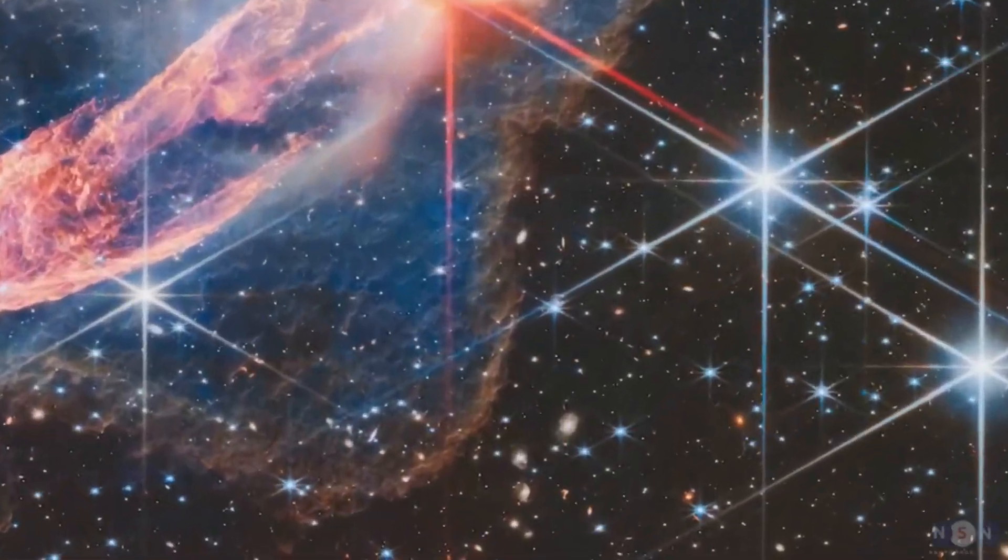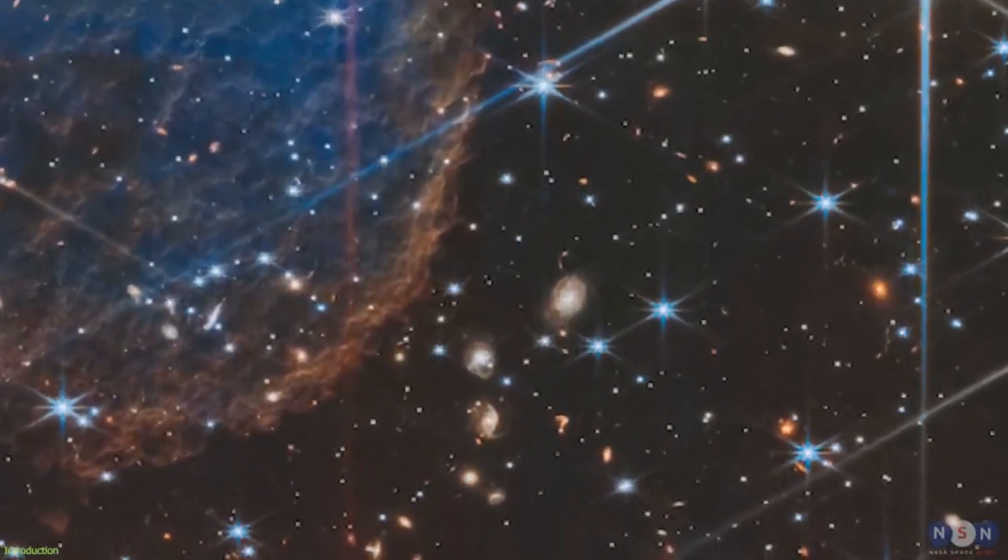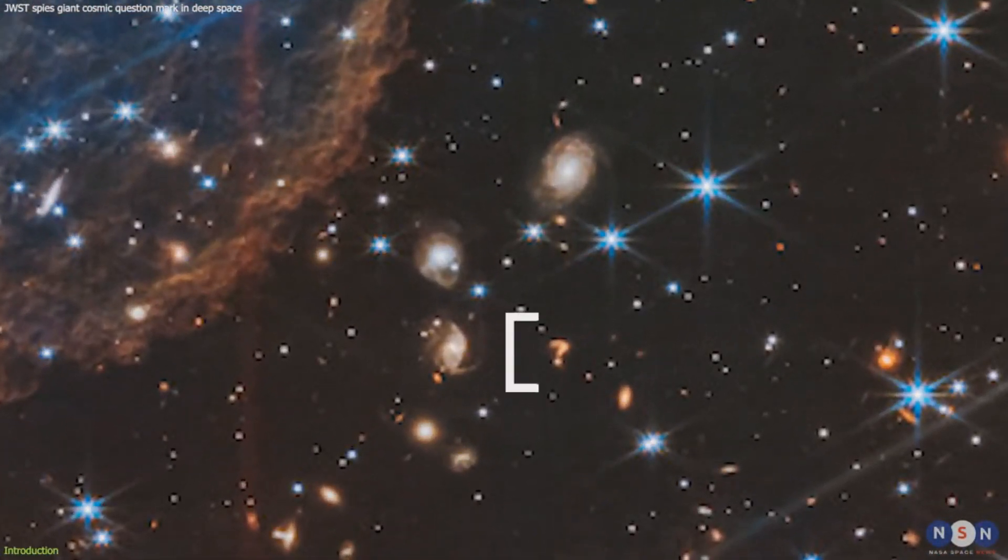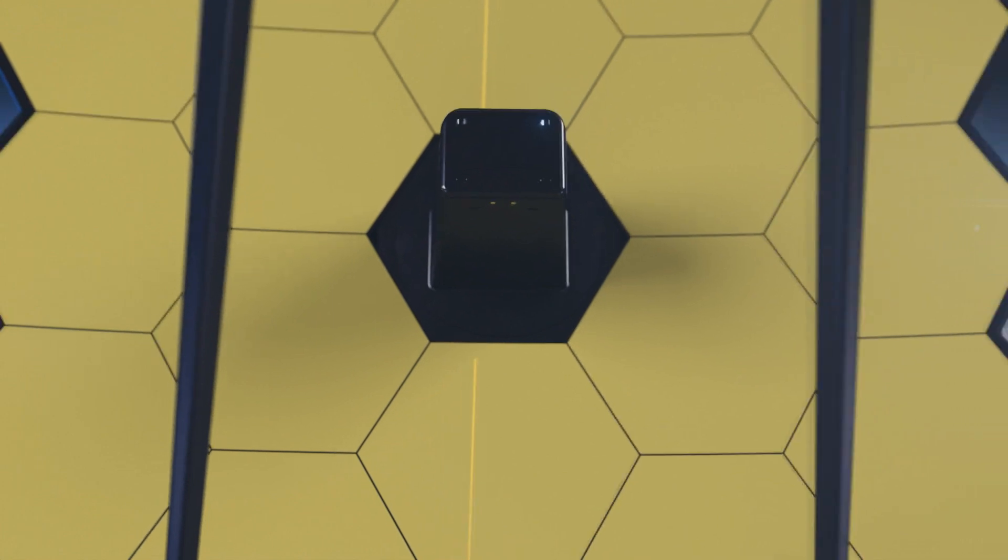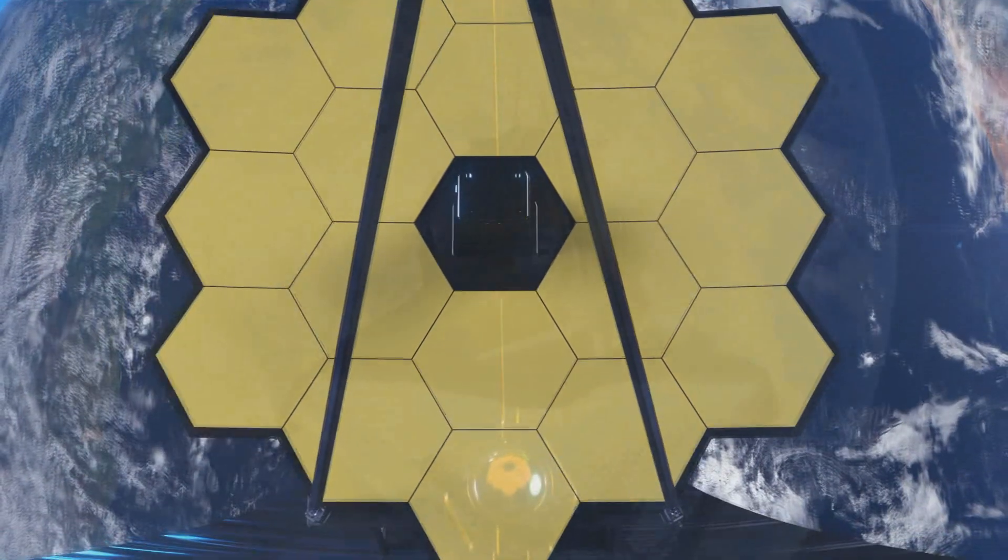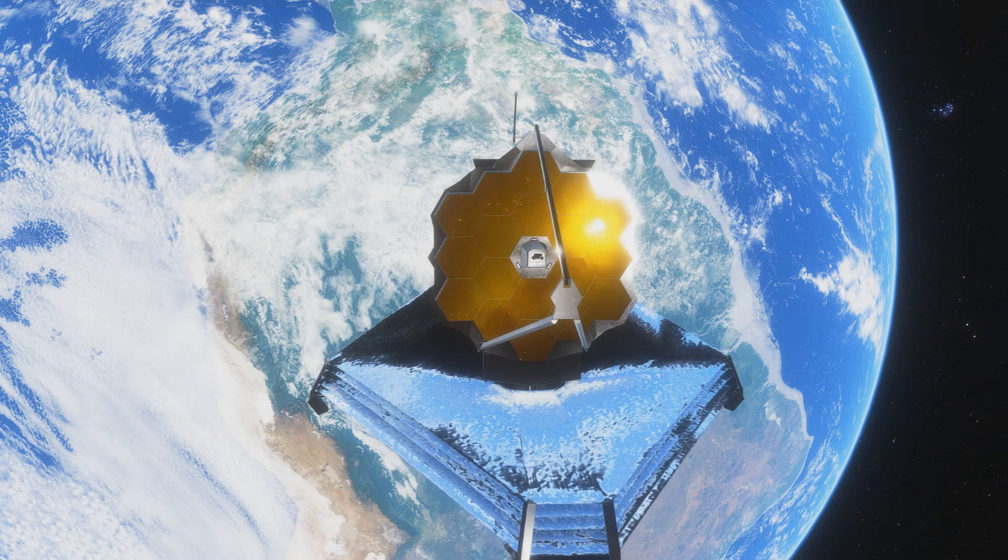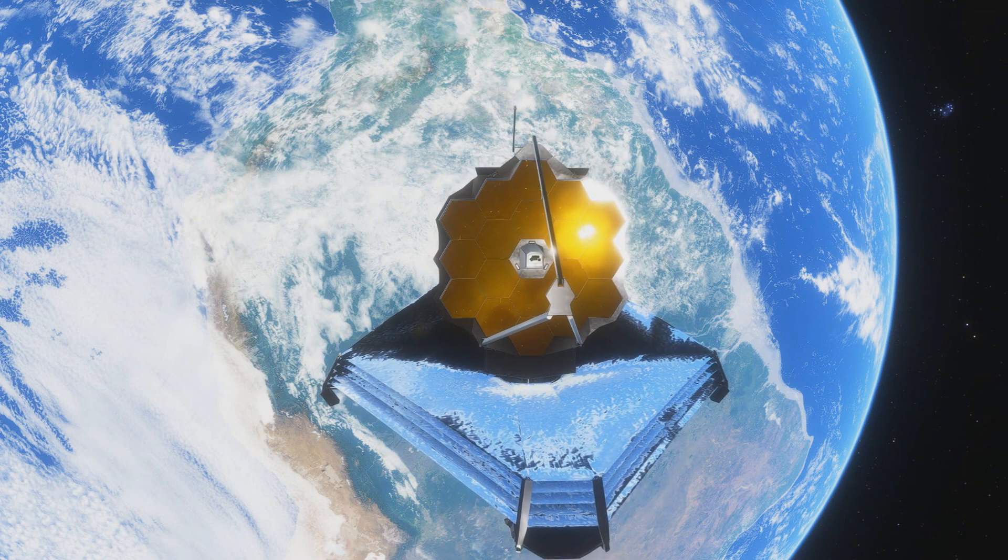So you might be wondering, what is this question mark object that has astronomers around the world scratching their heads? Picture this: a stunning celestial formation that seems to be hinting at something beyond our comprehension, captured by none other than the James Webb Space Telescope. This cutting-edge technology, launched in December 2021, has been peering into the cosmos, shedding light on the origins of the universe while raising even more intriguing questions.